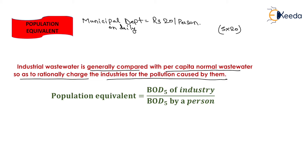We have computed the cost of total waste produced by that family. Now if some industry is producing a waste of around 1000 kg in one day, then how can we charge that industry? Because we have a rate on the basis of per person per day, we need to find out the population equivalent to rationally charge the industry for the pollution caused by them.